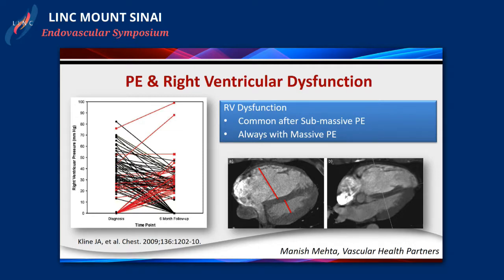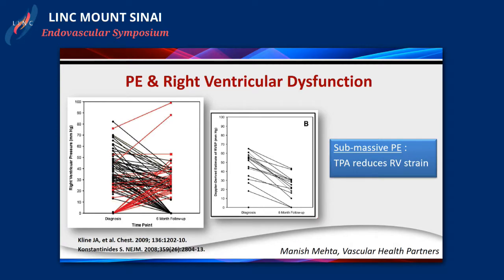Our thought process on RV strain has improved. RV dysfunction is commonly seen with submassive PEs, but with massive PEs it's almost always seen, and this is what leads to hemodynamic collapse. We know that thrombolysis with TPA reduces RV strain. Many studies have shown that the short and long-term gain is ill-defined, but we clearly understand there is a benefit in improving RV strain. I'm a vascular surgeon working with cardiologists who follow these patients. I have treated many such patients, and you can see how they improve over time - those treated aggressively versus those who are not.